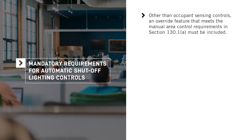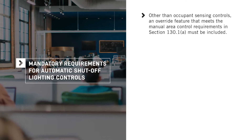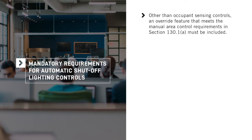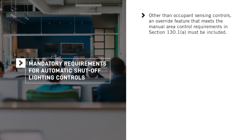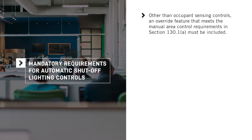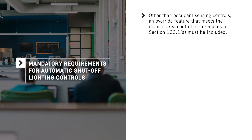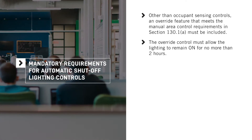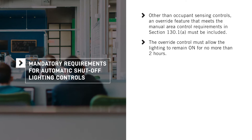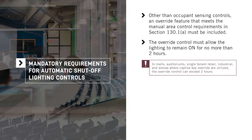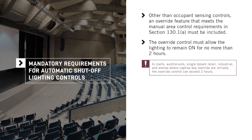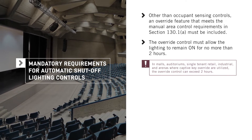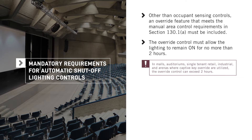Automatic time switch controls, other than occupant sensing controls, must include an override feature that meets the manual area control requirements in Section 130.1a so that occupants can manually control the lighting. The override control must allow the lighting to remain on for no more than two hours. However, in malls, auditoriums, single-tenant retail, industrial, or arenas where a captive key override is utilized, the override can exceed two hours.